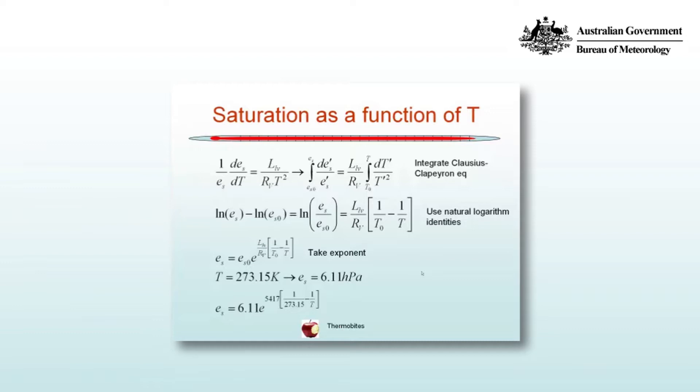We can integrate this equation, the Clausius-Clapeyron equation. We manipulate the equation, multiply through by dt, and then integrate over these dummy integration variables. The integral of dES'/ES' is integrated from ES0 to ES, and on the right hand side we have the integral from T0 to T of dT'/T'^2.